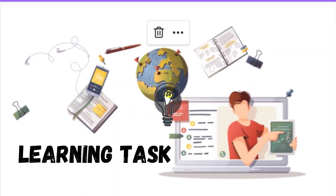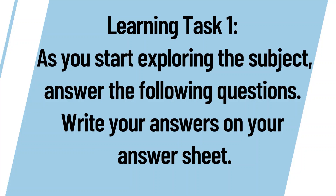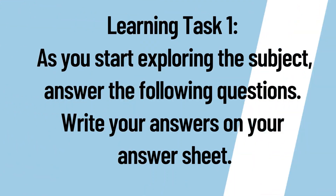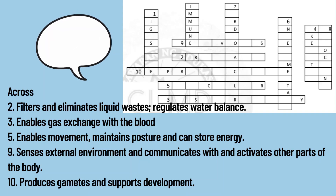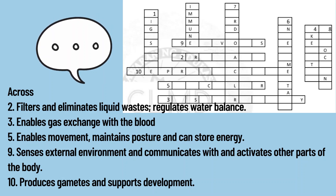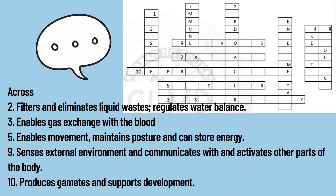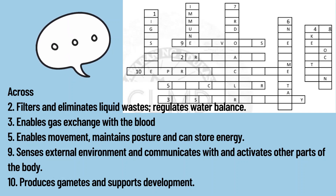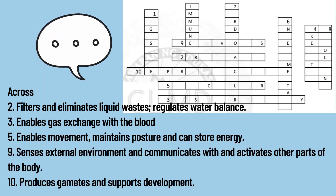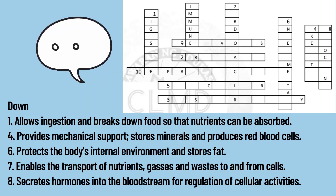We are done with our lesson and I'm sure you are ready for our learning tasks. Get your pen, answer sheet, and notebook. Learning Task 1: answer the following crossword puzzle questions. Write your answers on your answer sheet. You may ask for the assistance of your parents or guardians, and you may research the answers. Identify what is being described: across — Number 2: filters and eliminates liquid waste, regulates water balance; Number 3: enables gas exchange with the blood; Number 5: enables movement, maintains posture, and can store energy; Number 9: senses the external environment and communicates with other body parts; Number 10: produces gametes and supports development.